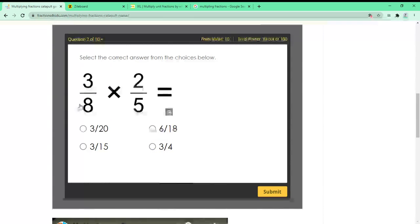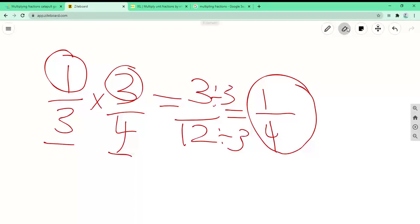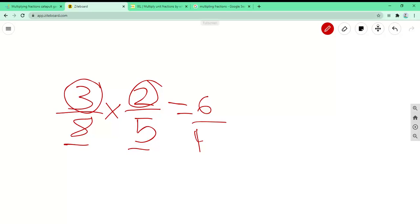Let's do another problem. 3 over 8 times 2 over 5 equals. So 3 times 2 is 6 over 8 times 5 is 40. So you can divide it by 2. 6 divided by 2 is 3, so 40 divided by 2 is 20. So the answer is 3 over 20.